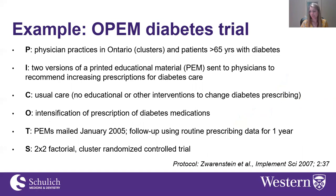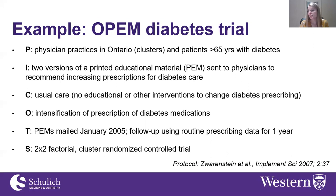There were two levels of participants in the trial: the physician practices, which were the clusters, and their individual patients — individuals over 65 with diabetes in Ontario. The intervention was a printed educational material mailed to physicians to recommend increasing prescriptions for diabetes care, and both a short and long version were tested. The comparator arm was usual care, and at the time there were no educational or other interventions in routine care aimed at improving prescribing for diabetes. The primary outcome was intensification of prescriptions for diabetes care, with follow-up using routinely collected prescribing data. The trial was designed as a two-by-two factorial cluster randomized trial.